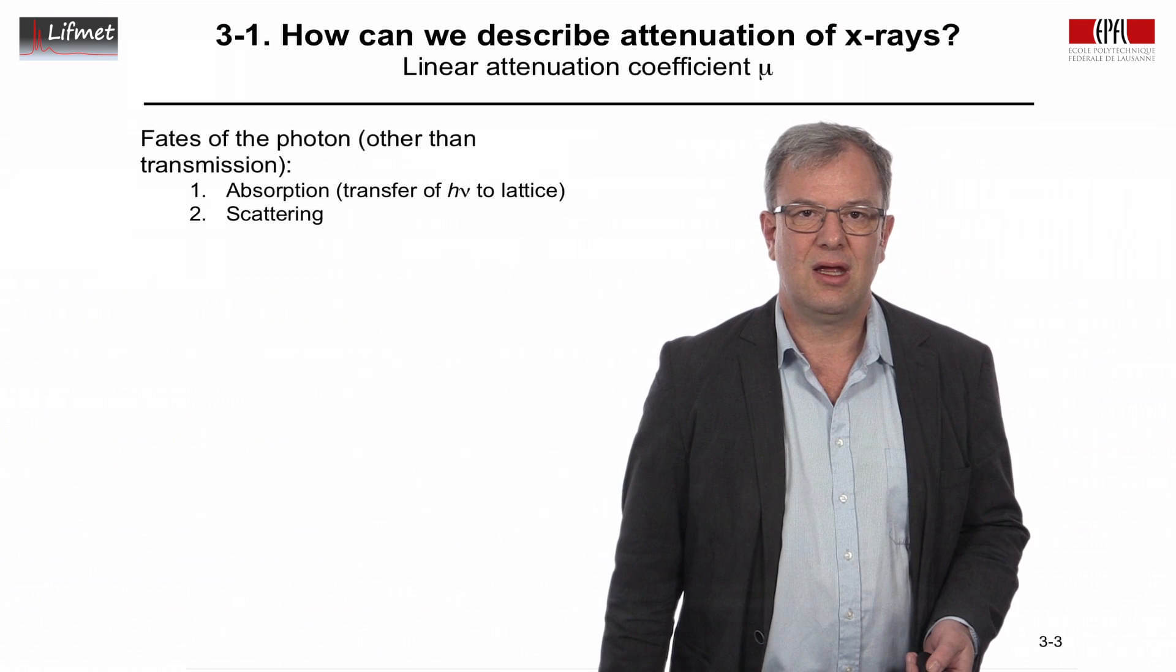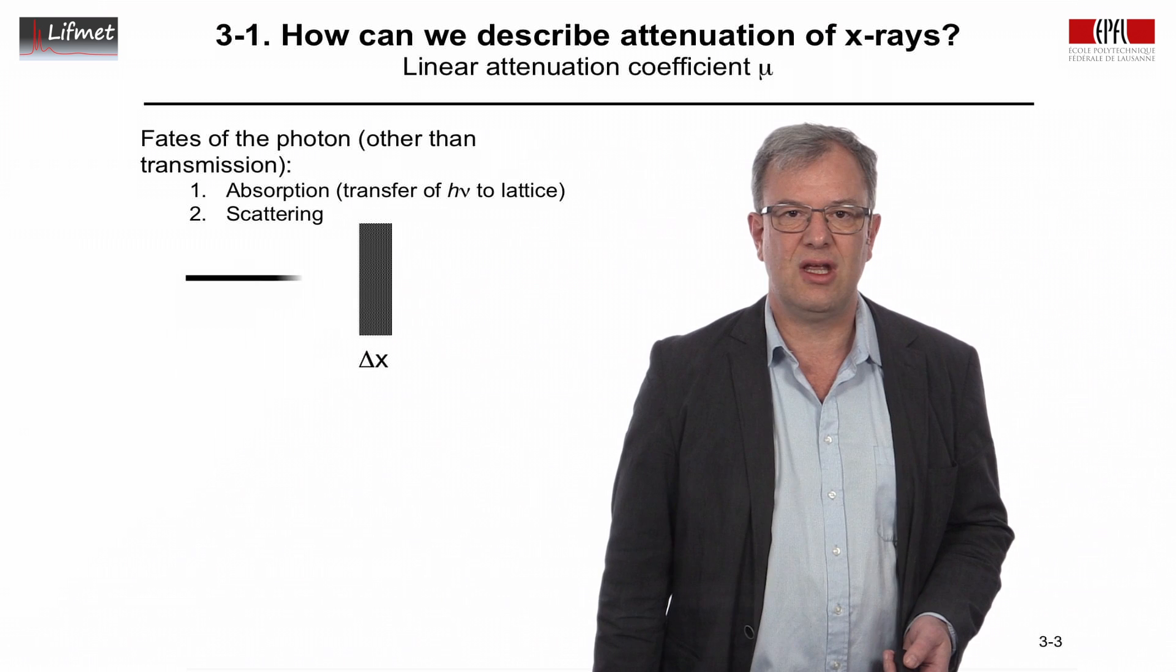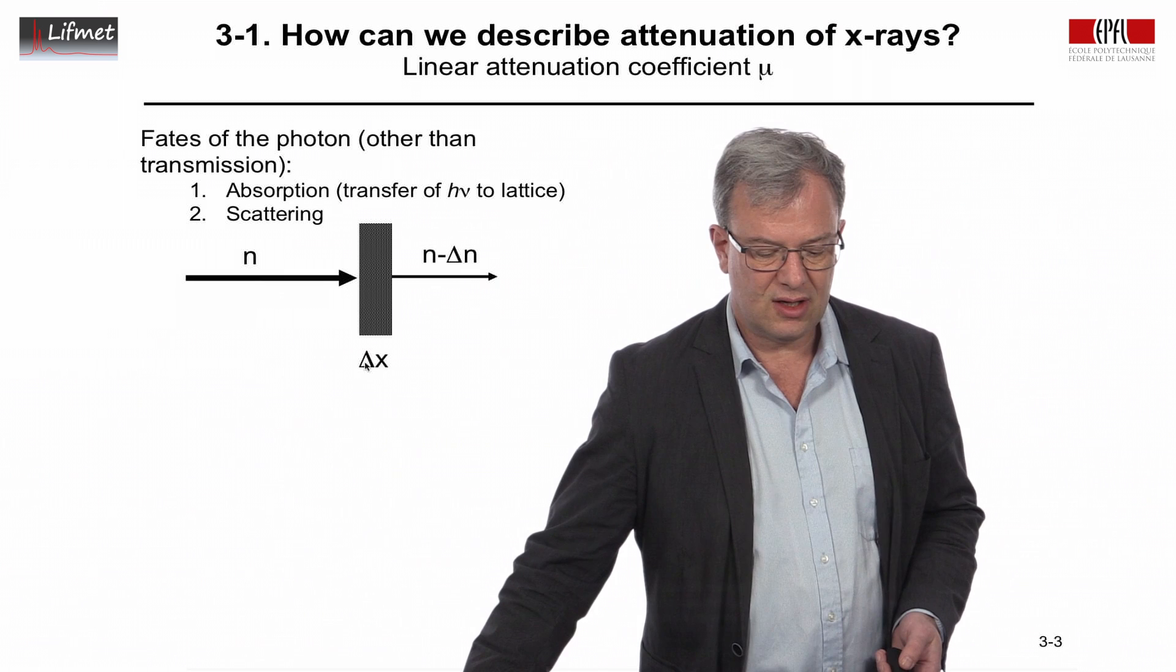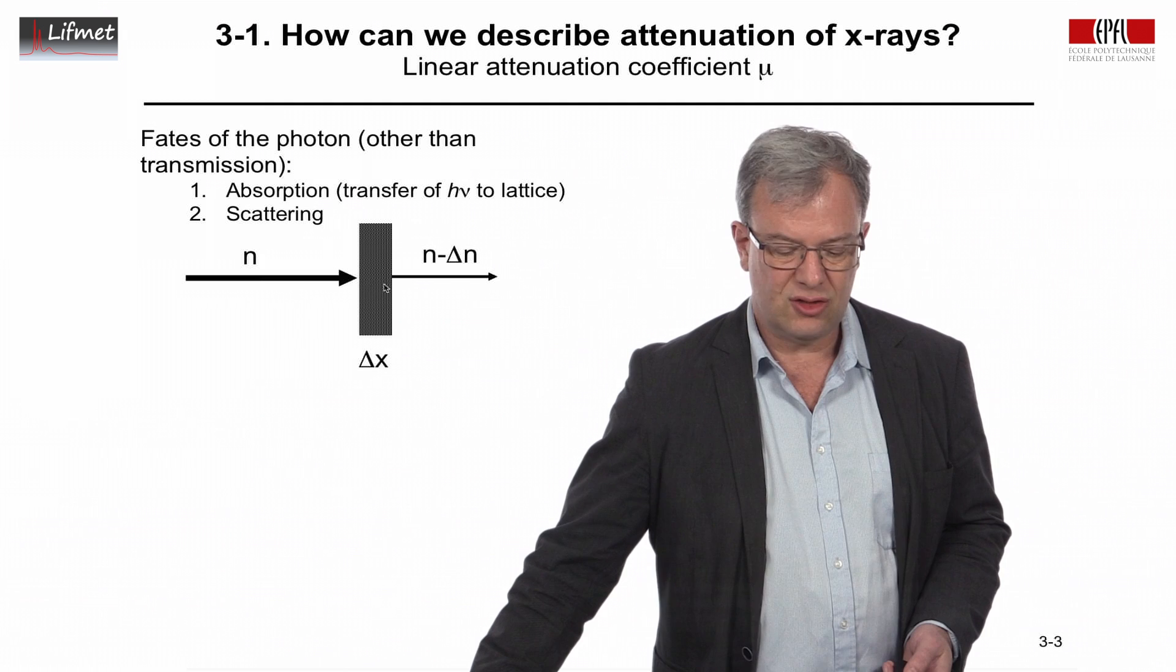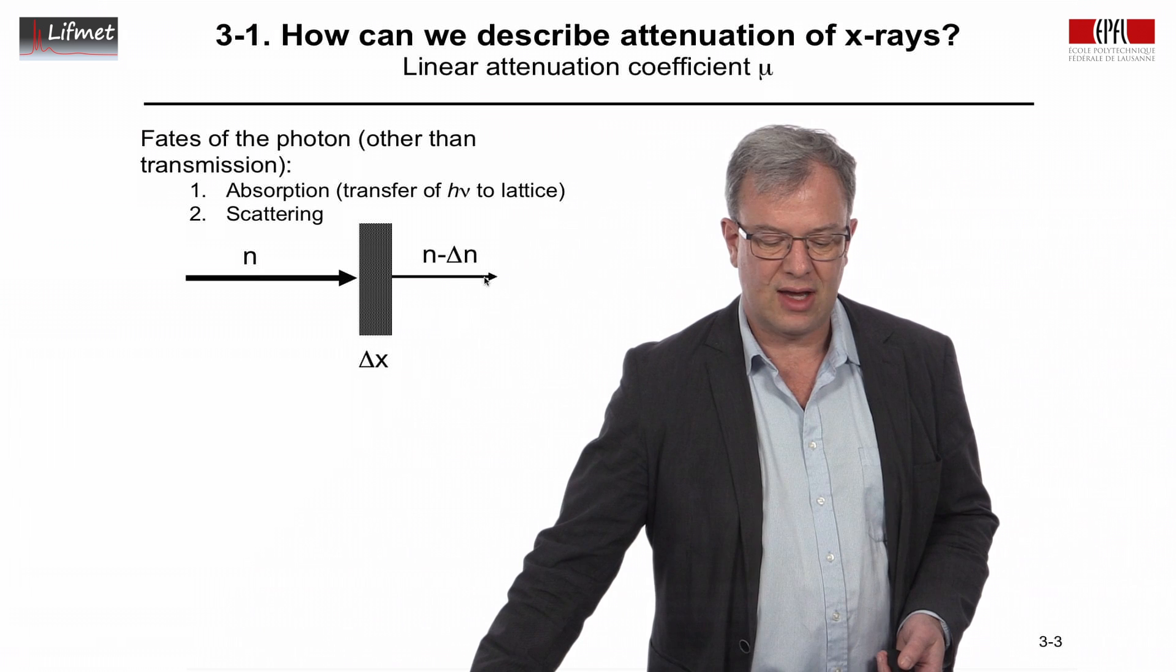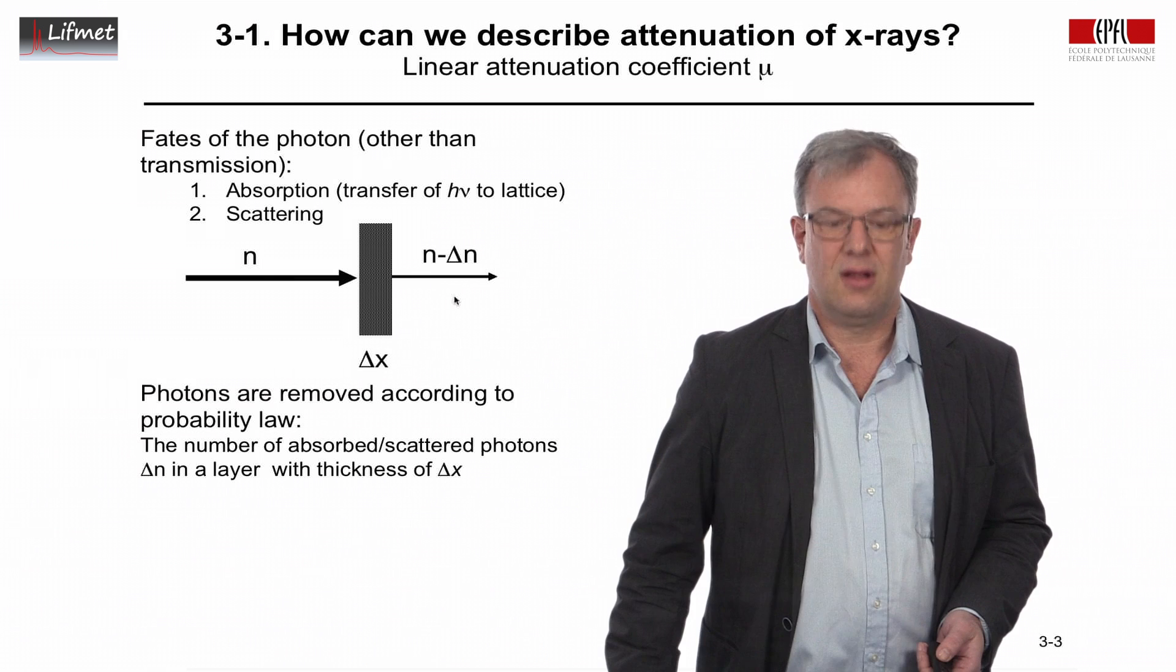And if it is scattered, by means that we will discuss next week, we will not be detecting a scattered photon. So let's take a situation here where we have a tissue layer of thickness delta x. We have n photons incident, n can be for example a thousand, ten thousand, some number here. They pass through this layer of tissue of thickness delta x, and after we have n minus delta n photons that continue their trajectory.